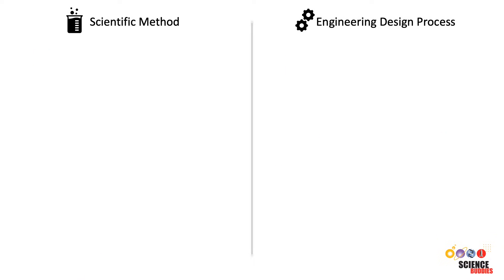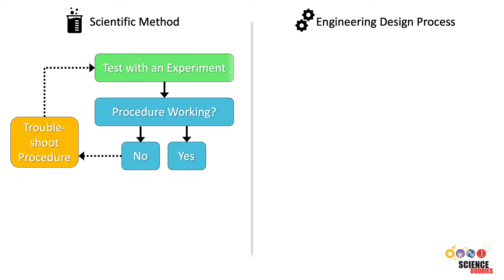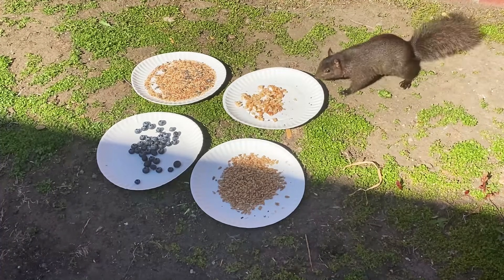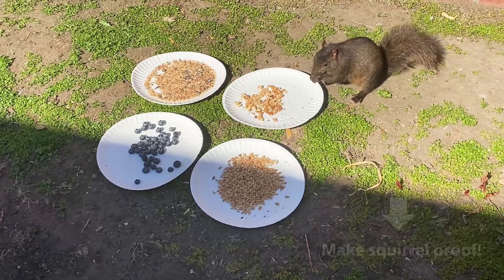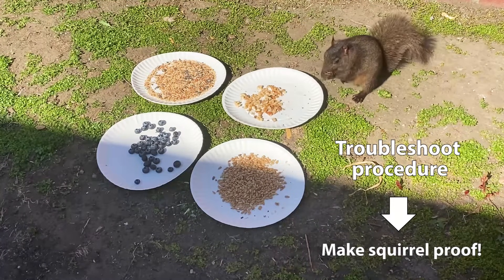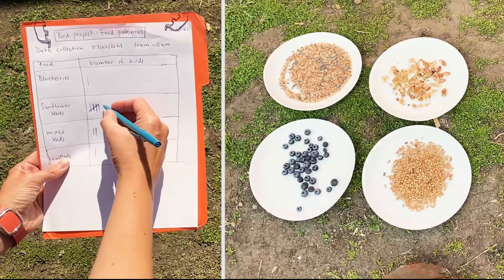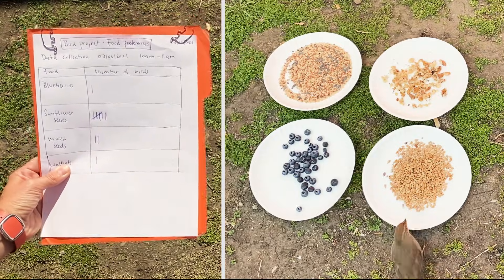In the scientific method, we need to actively ask whether the procedure is working as we experiment and collect data. If the experiment is not working, we will need to troubleshoot the procedure and restart the experiment. For example, we might find that other animals besides birds eat the food we put out, which means we will have to rethink our procedure and redo the experiment. The goal is to collect enough data to confidently determine if our hypothesis is being supported or not.